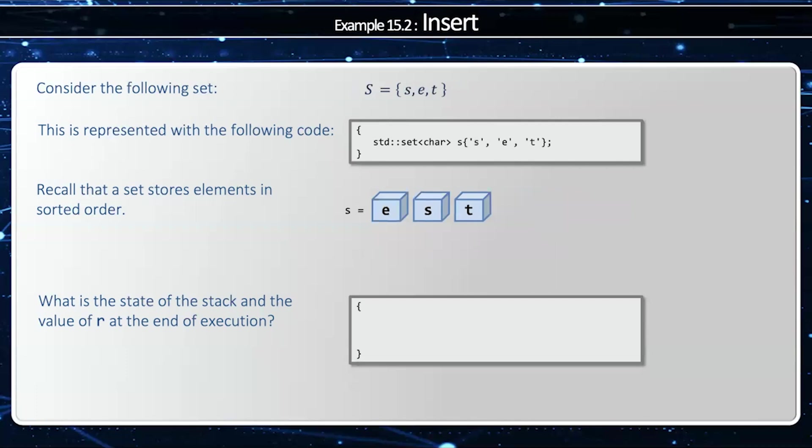Let's look at another example. I'm going to try to insert s, e, t into a set, and once again things go into sorted order: e, s, t. Then I'm going to say r equals s.insert(a), and I'm going to insert a new element, and it's going to go in front because 'a' is at the beginning in sorted order, and it'll be true to indicate a new element was added.